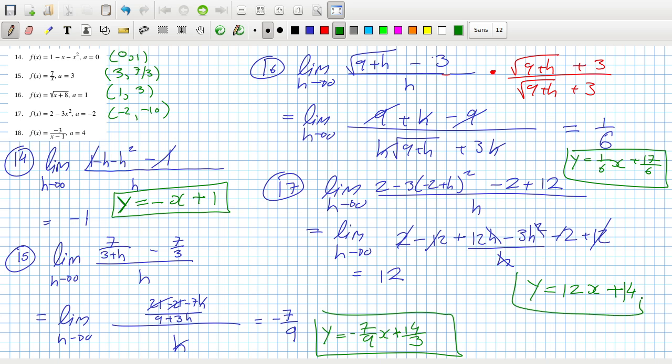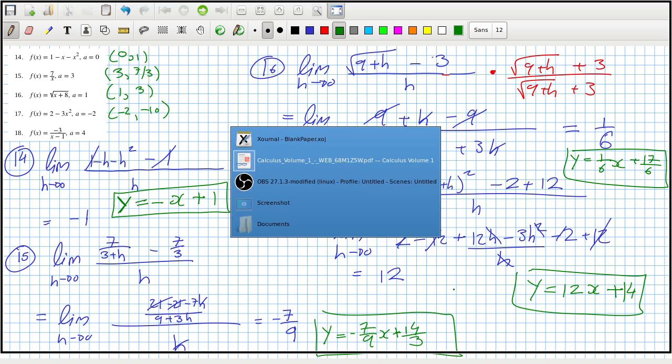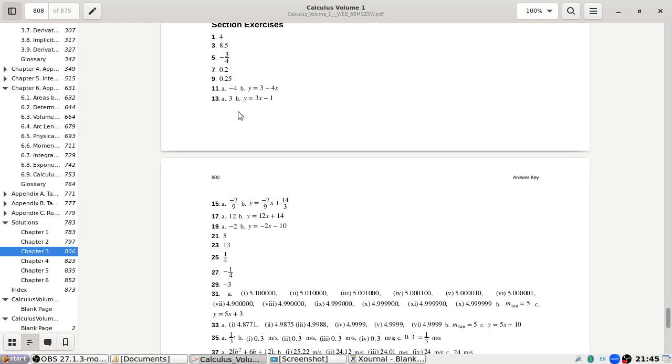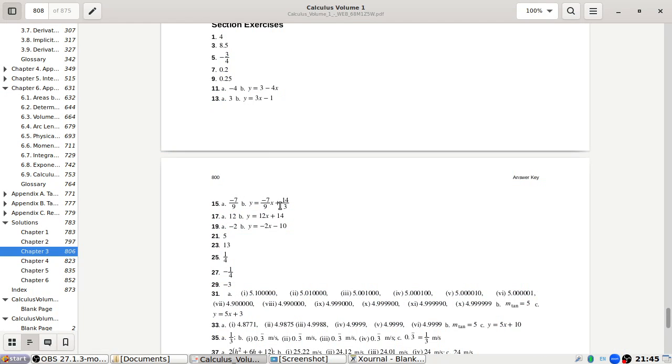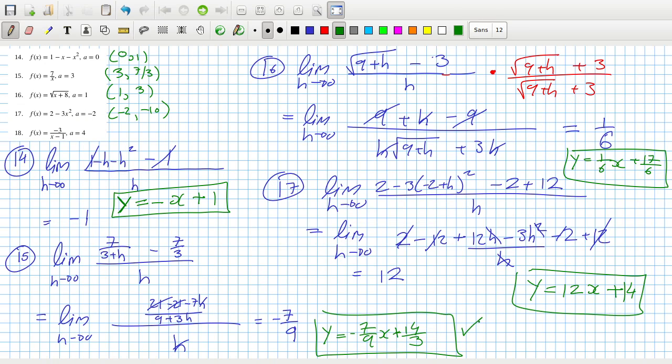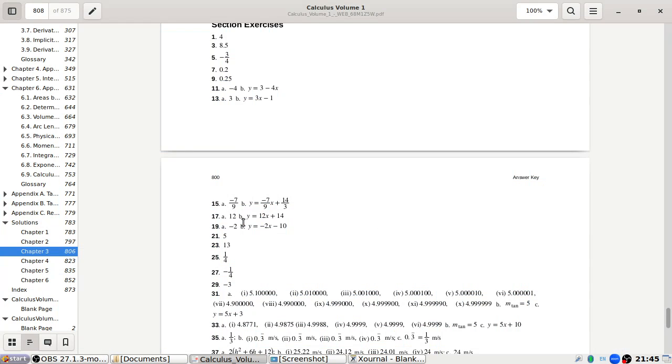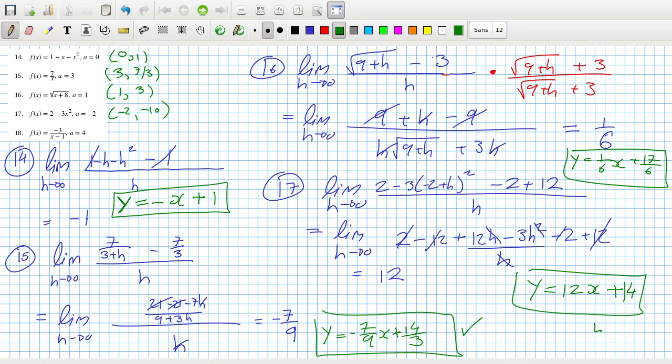Okay. Let's check if you're right. Okay. 14 now. 7 over 9. And then, plus. Not 14. Sorry. 15. Plus 14 over 3. Yeah. That's right. And then, 17. 12x plus 14. Yep. That's right. So, okay. I hope the other ones are right. Didn't make a silly mistake.